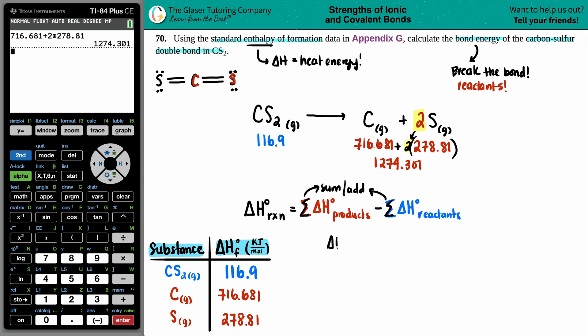Now we could find out the delta H. So the delta H for the whole entire reaction is the sum of the products, so 1,274.301 minus the sum of the reactants, which is 116.9. So delta H for that reaction is, I'm going to take this number, minus it by 116.9. So I get 1157.401 kilojoules per mole. Now this is for the whole reaction. So when this reaction happens, it produces 1159.401 kilojoules per mole, which basically means that as this is breaking into the carbon and the sulfur, it's a total of 1157 kilojoules.